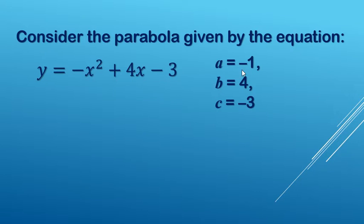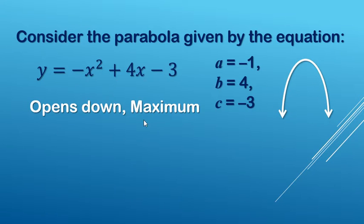Since the leading coefficient is a negative number, the parabola opens down and it has a top to it or a maximum. The maximum is the vertex.